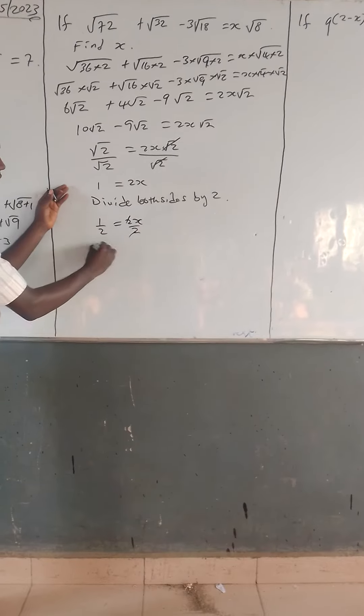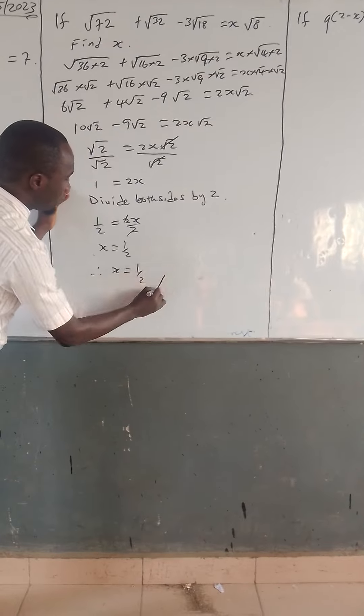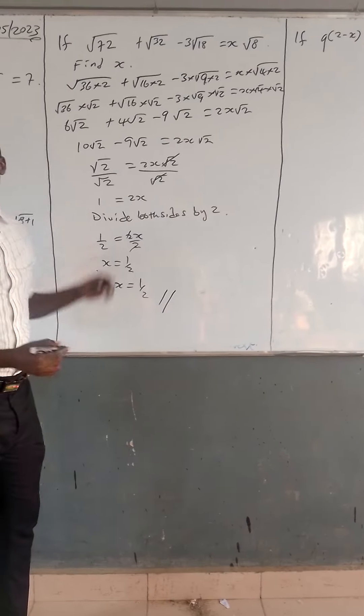2 cancels with 2, x equals 1 over 2. Therefore, x equals 1 over 2. This is the solution for this equation.